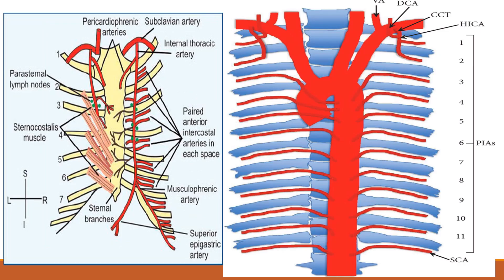For the posterior intercostal spaces, as we can see in the diagram, the posterior intercostal arteries of the first and second spaces arise from the superior intercostal trunk, which is a branch of the subclavian artery, supplying the first and second posterior intercostal spaces.